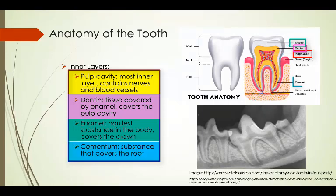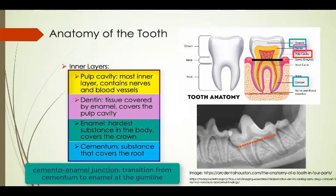Cementum is the layer that covers the root of the tooth. With this in mind, if you look at the location of the gum line, you can correctly state that there is a small transition from cementum to enamel between the root and the crown of the tooth. In veterinary medicine we refer to this as the cemento-enamel junction, which can help us determine the health status of teeth, especially in x-rays.